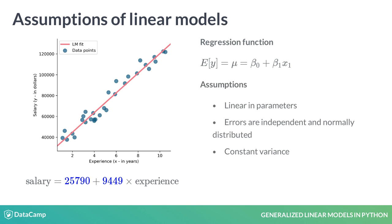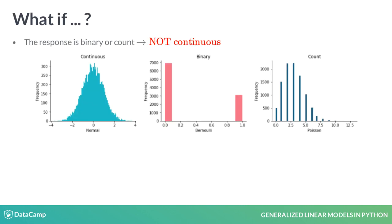The model assumptions are linearity in the parameters, the errors are independent, normally distributed, and the variance around the regression line is constant for all values of x. But what if the response is not continuous, but binary or count? Or the variance depends on the mean? Can we still fit a linear model?